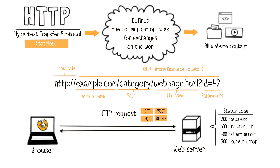Other categories of status codes include 200 for success, 300 for redirection, 400 for access denied, and 500 for server error. If the file is found, the server sends the requested content.